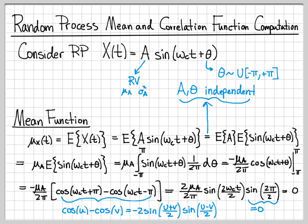So we have computed the mean function for this random process. And it is equal to 0. Let's go ahead and do the correlation function now.